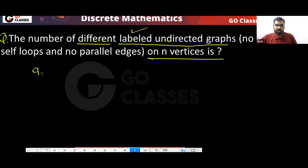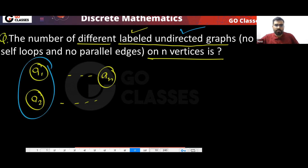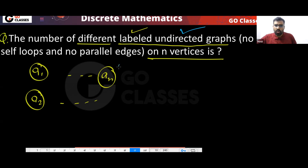So there are n vertices: a1, a2, ..., an. The question says the vertices are labelled, so all vertices are already labelled. Now, to create an undirected graph, for every pair of vertices you have two choices: either you put an edge between them or you do not put an edge. Either you make them adjacent or you don't make them adjacent.